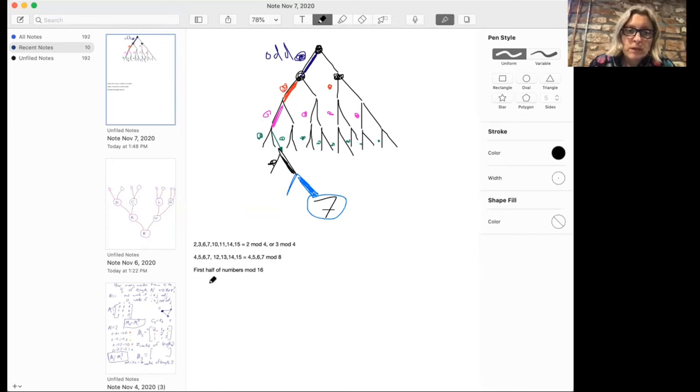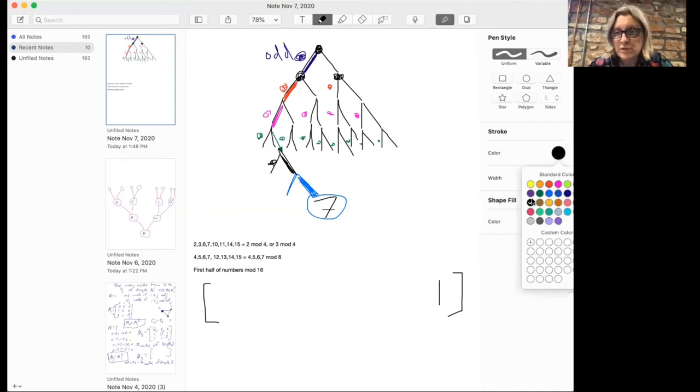So for those of you who have seen the binary representation of a number before, what these panels are really telling you are the digits of the binary representation. So the fact that we were on the navy panel told us that we were one mod two. And so that meant that our last digit in our binary representation should be one.